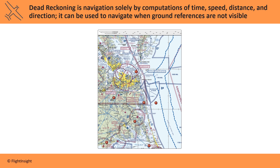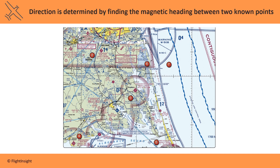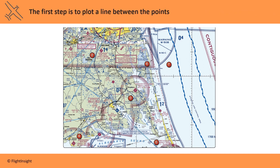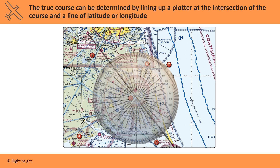The E6B flight computer can be used in the test to help with these calculations. Direction is determined by finding the magnetic heading between two known points. Let's say we're flying from First Flight Airport in Area 5 on the chart to Hampton Roads in Area 2. The first step is to plot a straight line between these two points. The true course can be determined by lining up a plotter at the intersection of the course and a line of latitude or longitude. We'll line up the center hole of the plotter with the point where the line we drew intersects the line of longitude, then read our true course as 320 degrees.